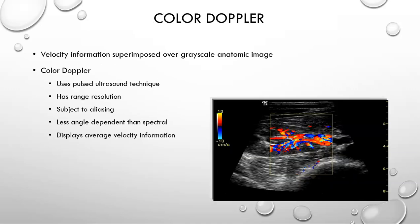With color Doppler, we get velocity information superimposed over the grayscale anatomic image. Color Doppler uses pulsed ultrasound technique and therefore has range resolution. It is very subject to aliasing, but is much less angle-dependent than spectral Doppler. Color Doppler always displays an average velocity, never the peak velocity. Therefore, color Doppler will always show lower velocity scales than the spectrum.